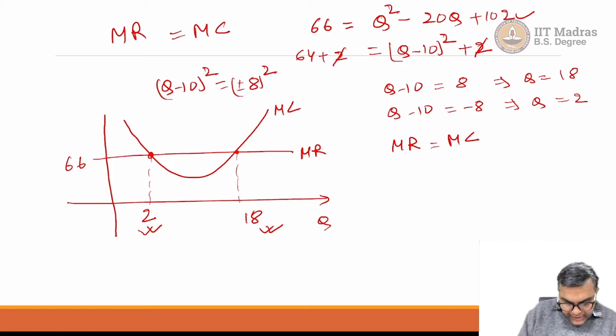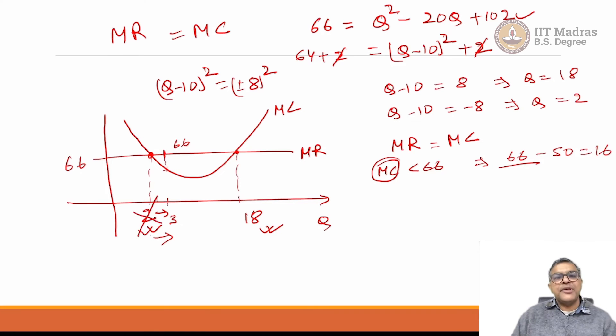Let us see what happens at 2. If the firm goes beyond 2 to, let us say 3, what is happening? MR remains fixed at 66. What happens to MC? MC is now lower than 66. By moving from 2 to 3, the firm is able to gain 66 as marginal revenue and cost is going to be something less than 66. Let us ballpark it and say 50, does not matter which number it is, but you are going to get 16 or some positive number. It is a good idea to move from 2 to 3, and therefore, this 2 cannot be optimal.